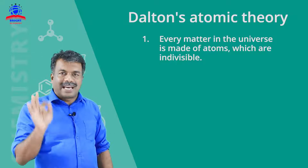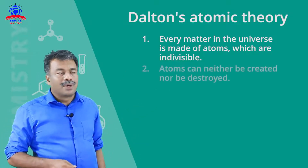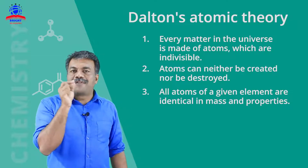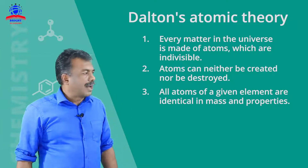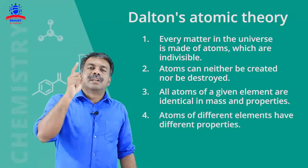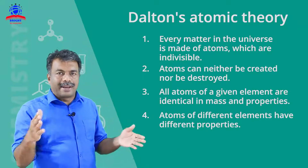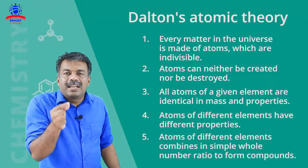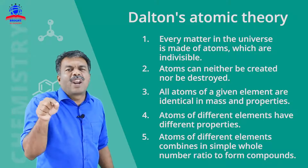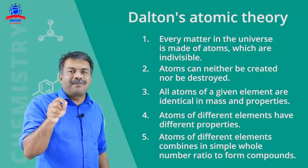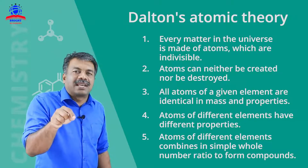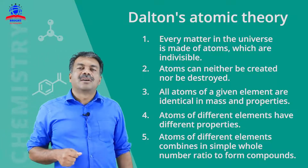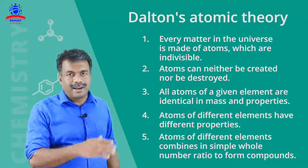These smallest particles are known as atoms. Atoms can neither be created nor be destroyed. Atoms of the same element are identical in all respects. Atoms of different elements are non-identical — they have different properties. And the fifth postulate: atoms of different elements combine in simple whole number ratios to form compounds. These are the postulates of Dalton's Atomic Theory.